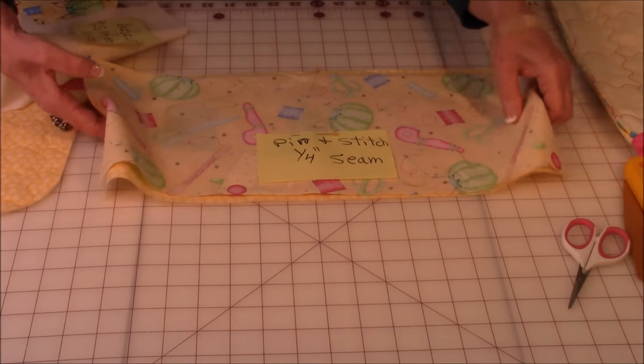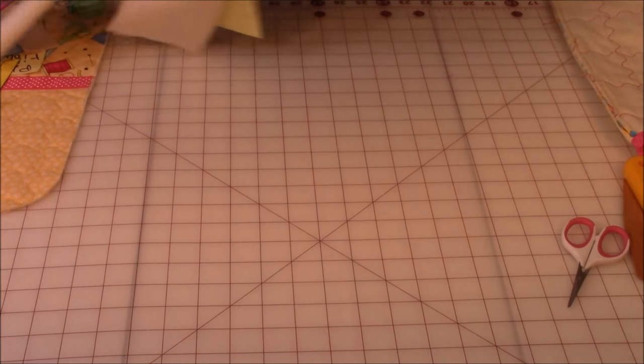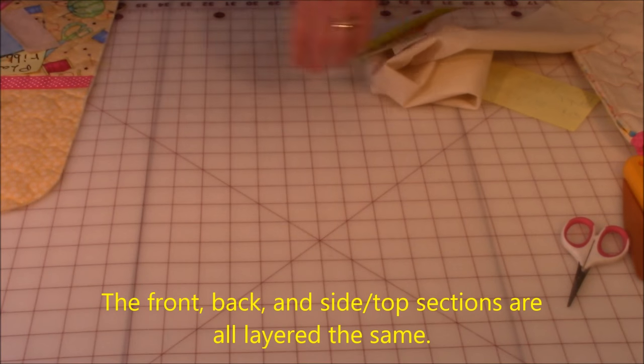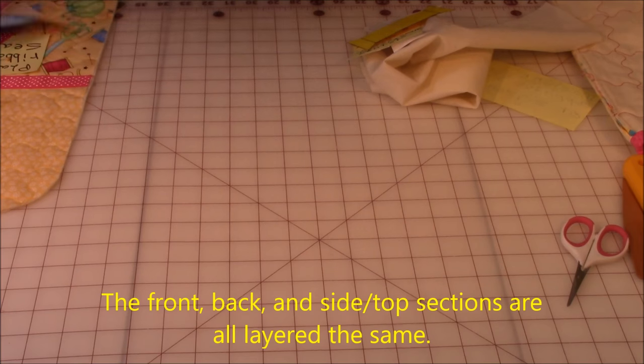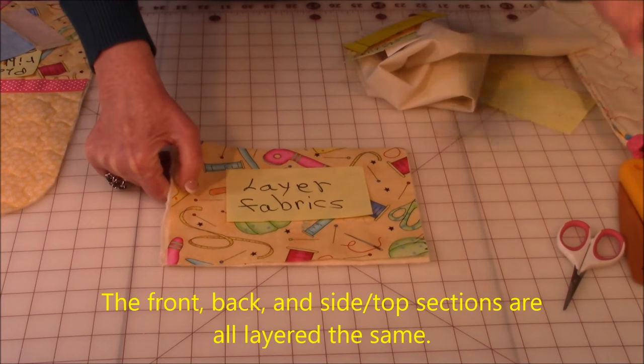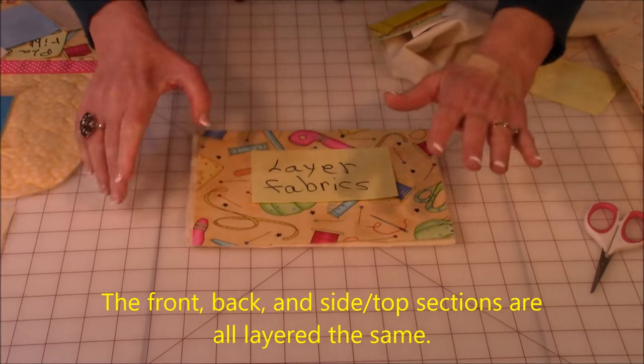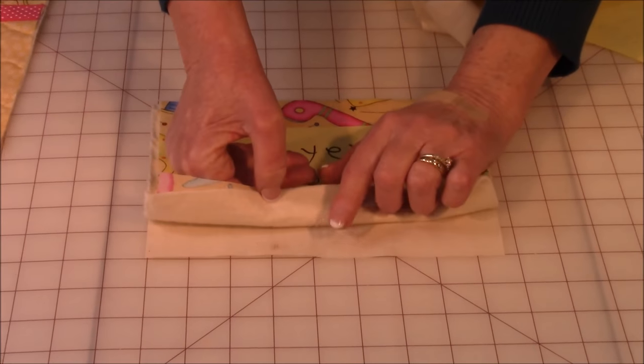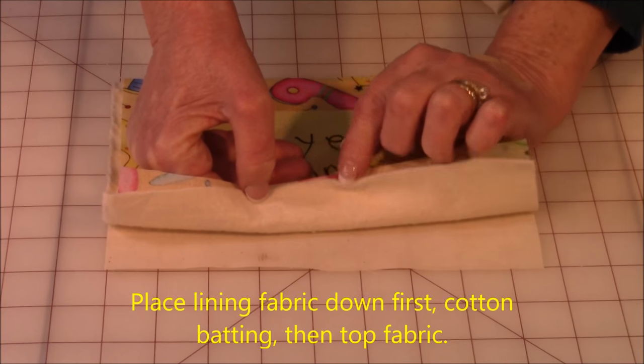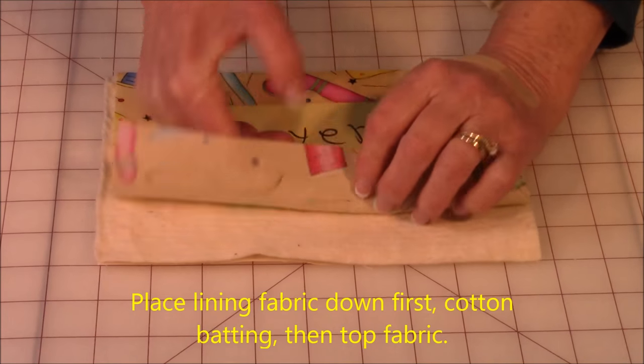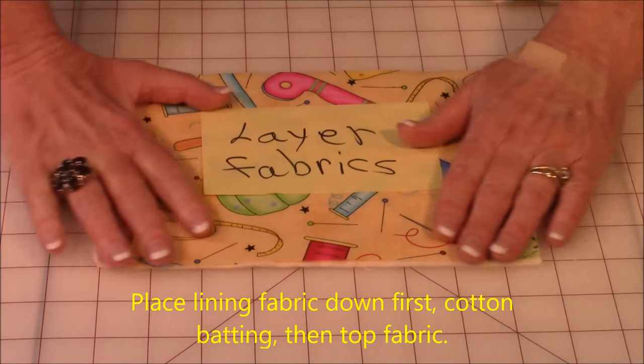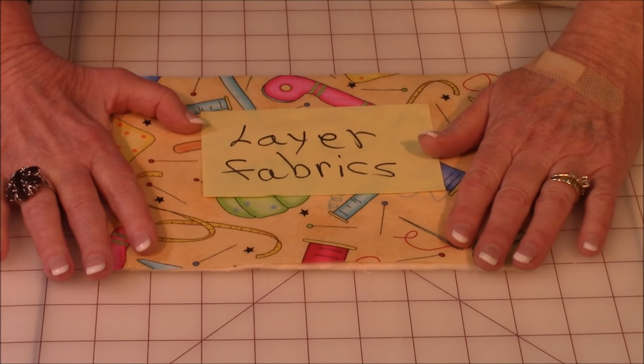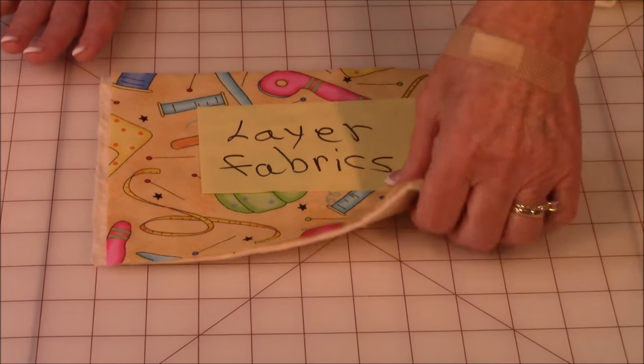Now all three sections are going to be layered the same. So whether it's the back, the side, or the front, they're all layered the same. So lay your lining down first. Then your cotton batting. And then whatever fabrics you're using for the outside, place that on top. All three are layered the same.